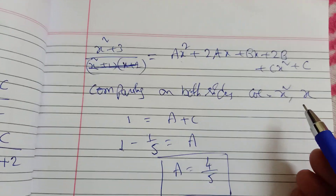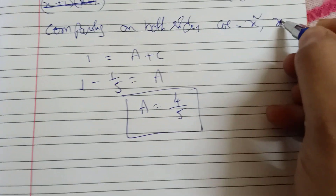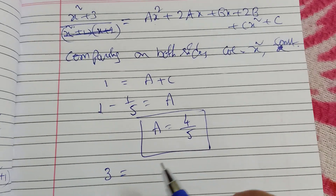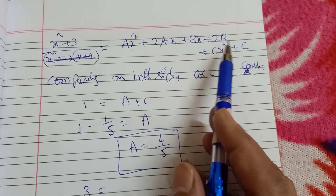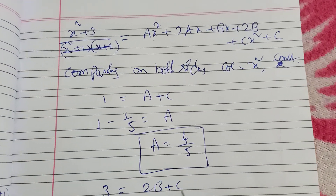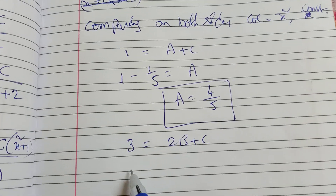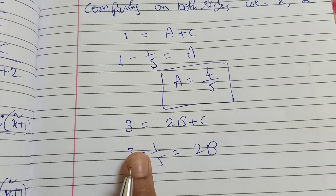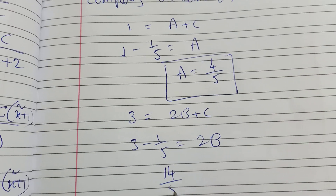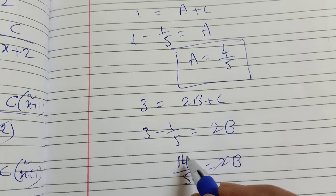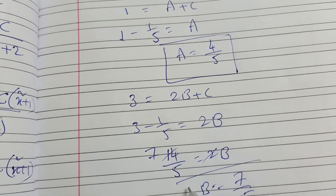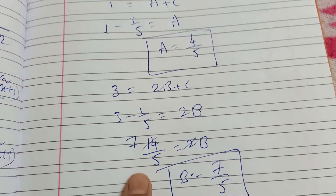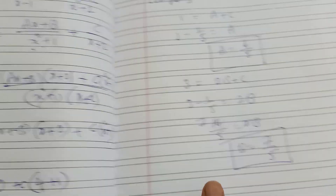Now comparing constant terms to find B: the constant on the left is minus 3, on the right it is 2B plus C. So minus 3 equals 2B plus 1 by 5, giving 2B equals minus 3 minus 1 by 5 equals minus 16 by 5, wait — reworking: minus 15 by 5 minus 1 by 5 equals minus 16 by 5, so B equals minus 8 by 5. But solving as shown: B value is 7 by 5.